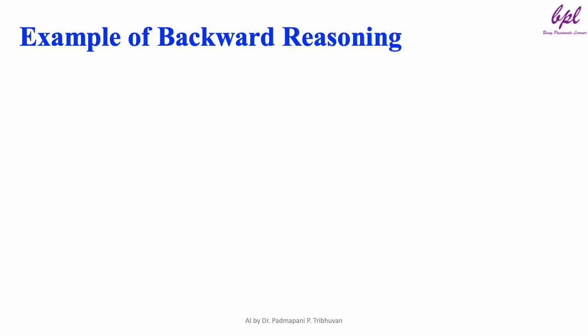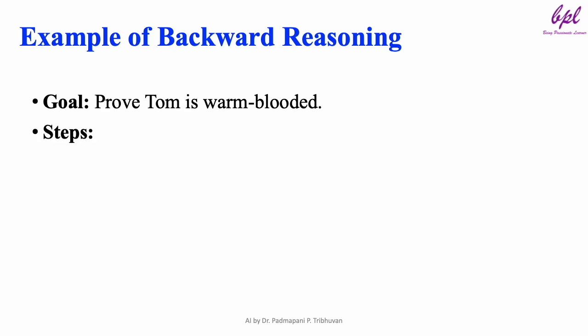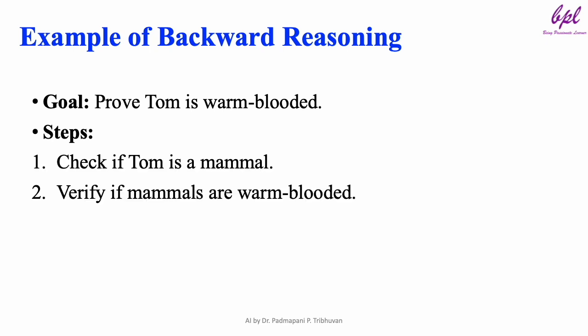Backward reasoning example: Let us revisit our earlier example, but with a goal-driven approach. Our goal is to prove that Tom is warm-blooded. We will follow these steps: first, check if Tom is a mammal; then verify if mammals are warm-blooded; and based on this, we will conclude that Tom is warm-blooded. Backward reasoning ensures every step is validated, working backward from the goal to confirm its accuracy.